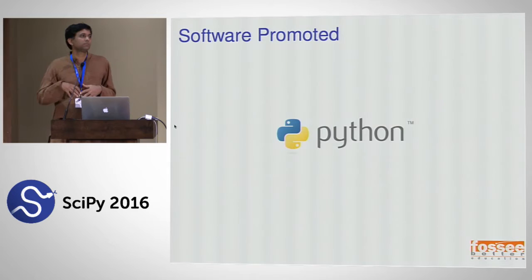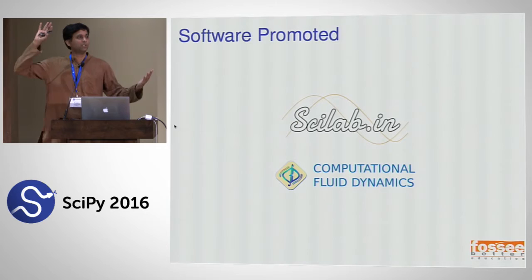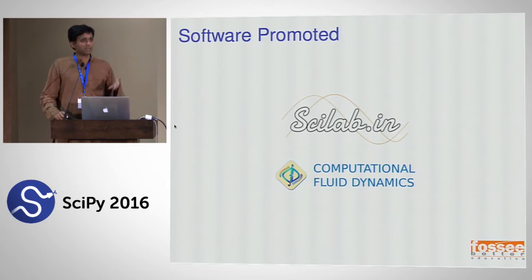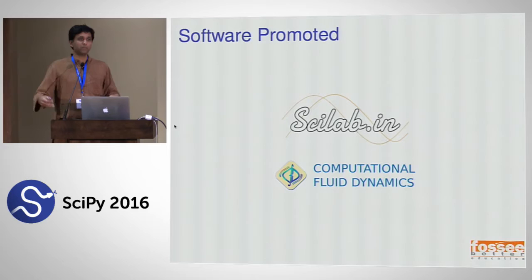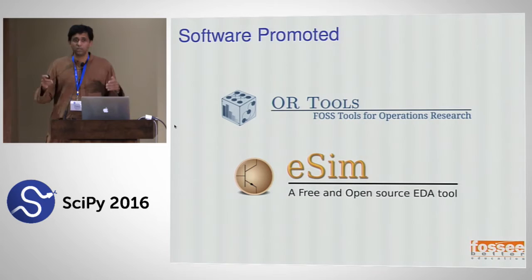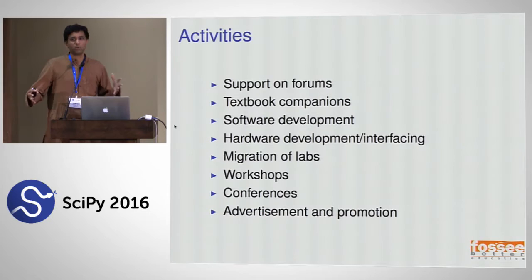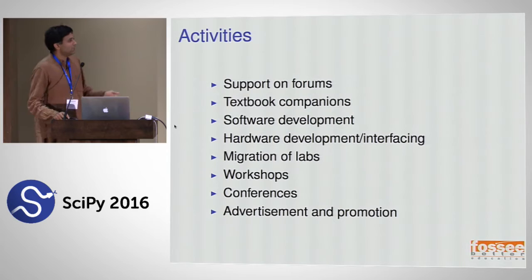We promote several packages — it's not just Python. I'm taking care of the Python side, but there's also Scilab, which is easy for someone using MATLAB to switch to directly. There's a group looking at computational fluid dynamics with OpenFOAM as an alternative to Ansys Fluent. Another group looks at operations research tools. There's a group building eSIM, which accumulates electronic design analysis tools. There's OSDAG — open steel design software — and Sandi, a LabVIEW-like replacement. We also have projects to help people integrate with hardware. There are about 14 PIs, about eight of whom are really active.